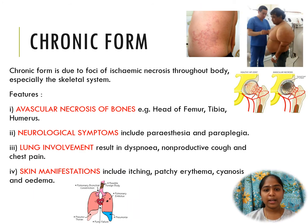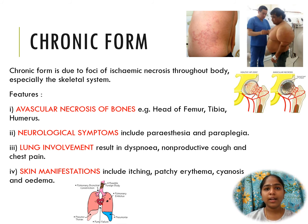Chronic form of decompression sickness is due to foci of ischemic necrosis throughout the body, especially in the skeletal system. Ischemic necrosis may be due to embolism itself, but other factors such as platelet activation, intravascular coagulation, and hypoxia might also contribute. Features include avascular necrosis of the bones occurring in the head of femur, tibia, and humerus. Neurological symptoms may occur due to ischemic necrosis in the CNS, which may include paresthesia and paraplegia. Lung involvement in the form of hemorrhage, edema, and emphysema may be seen.